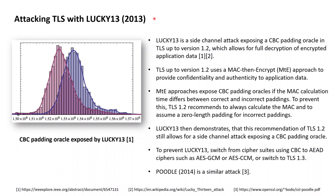Lucky 13 is a side-channel attack on TLS versions 1.2 and lower. More specifically, Lucky 13 is a time-based side-channel attack that exposes a CBC padding oracle, resulting from the use of a Mac-then-encrypt approach, which allows a man-in-the-middle to fully decrypt the encrypted application data exchanged between a client and the server.